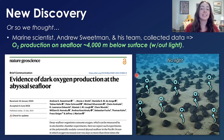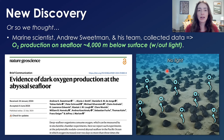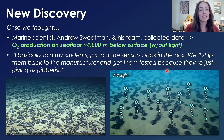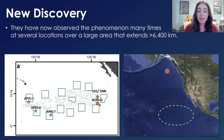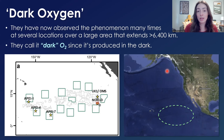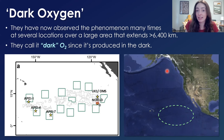Marine scientist Andrew Sweetman and his team collected data published last month, June 2024, showing that oxygen is being produced on the seafloor around 4,000 meters below the surface where absolutely no light can reach. The lead scientist said he initially told his students to recalibrate the sensors because the data couldn't be right. In fact, they first observed this in 2013 — over 10 years ago — and have since observed this phenomenon many times in many locations over a large area extending over 6,400 kilometers. They now recognize it as real and are calling it dark oxygen — oxygen produced in the absence of light.